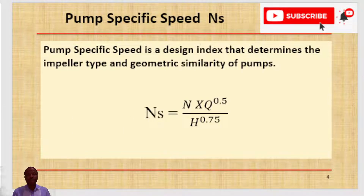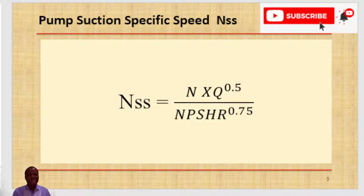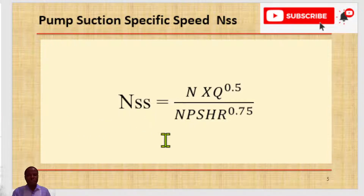The next concept is pump function specific speed, which is not to be confused with pump specific speed. Pump specific speed is an indicator of impeller geometry and discharge characteristics, while pump function specific speed is an indicator of the impeller inlet geometry and suction characteristics. Pump function specific speed is expressed as Nss.